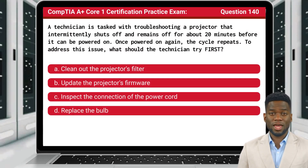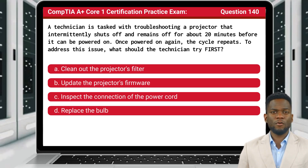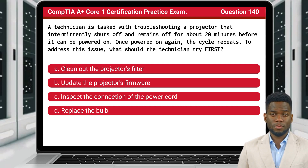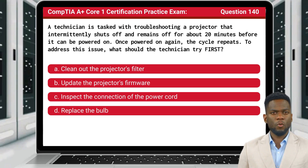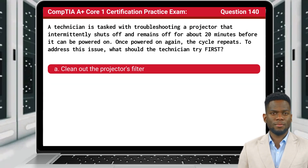Question 140. A technician is tasked with troubleshooting a projector that intermittently shuts off and remains off for about 20 minutes before it can be powered on. Once powered on again, the cycle repeats. To address this issue, what should the technician try first? The answer is A: clean out the projector's filter.